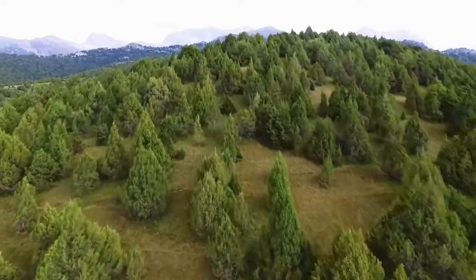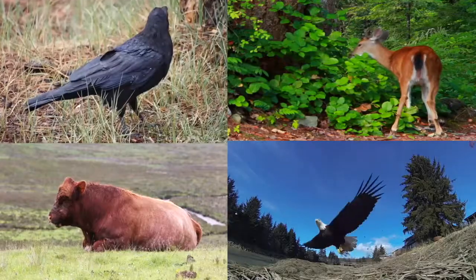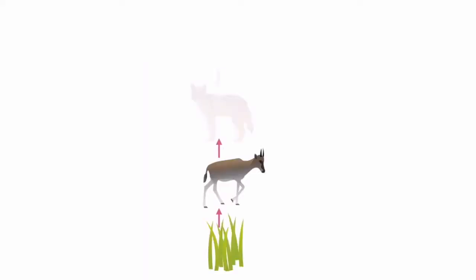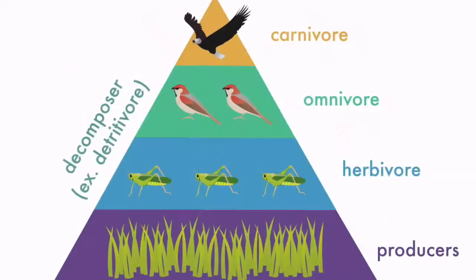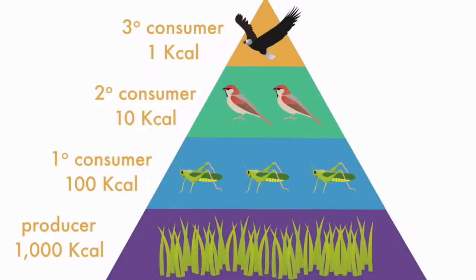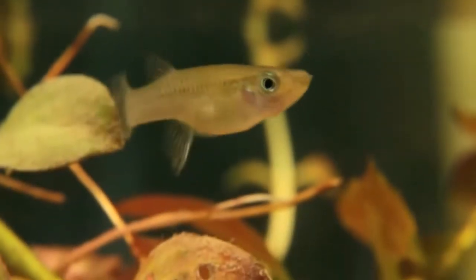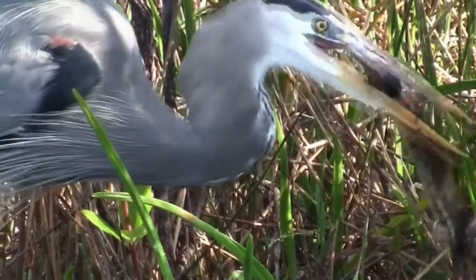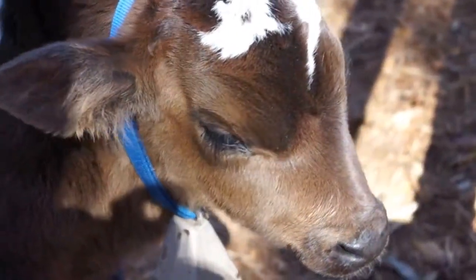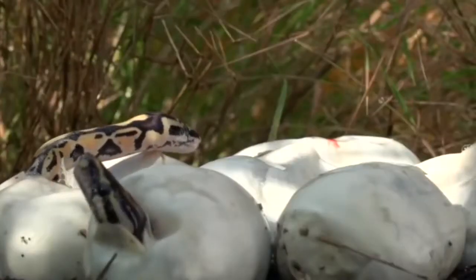A basic function of the ecosystem is to move energy from the sun through various consumers to its final dissipation in a series of energy transfers known as the food chain. The various members of the food web can be grouped into categories called trophic, or feeding, levels. At each trophic level, estimates of the efficiency of energy exchange are defined as: consumption efficiency — the proportion of available energy being consumed; assimilation efficiency — the portion of energy ingested that is assimilated and not lost as waste material; and production efficiency — the portion of assimilated energy that goes to growth rather than respiration.